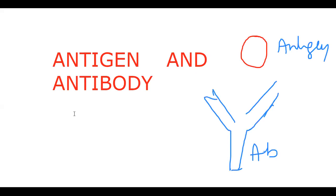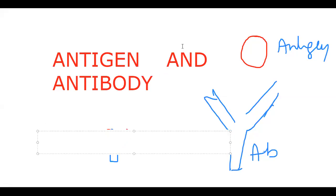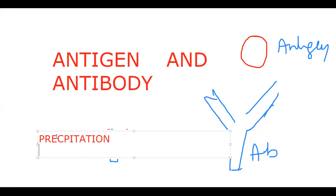Whenever an antigen and antibody bind each other, sometimes the complex appears in the form of precipitation. Sometimes antigen and antibody bind in the form of agglutination. So the antigen-antibody complex is sometimes visible as precipitation, sometimes as agglutination.